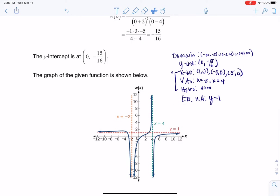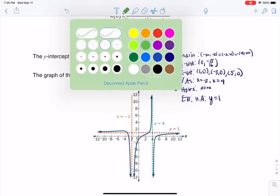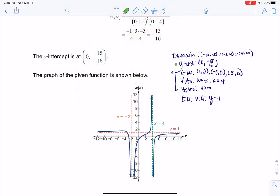And I want to paste this here so that we can see what I'm looking at. So my domain, I've got my domain. Let's take a look at the Y-intercept. I'll change pen colors here. So if I look at my Y-intercept at 0, negative 15/16, there is my Y-intercept on the graph.